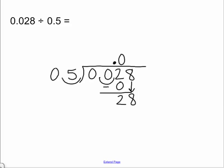Bring down the 8. 5 goes into 28, 5 times. 5 times 5 is 25. Subtract. You get 3.